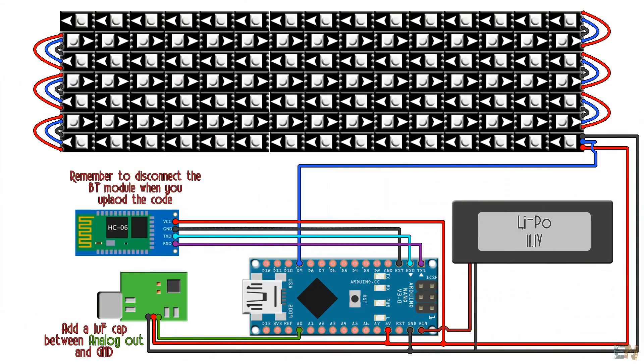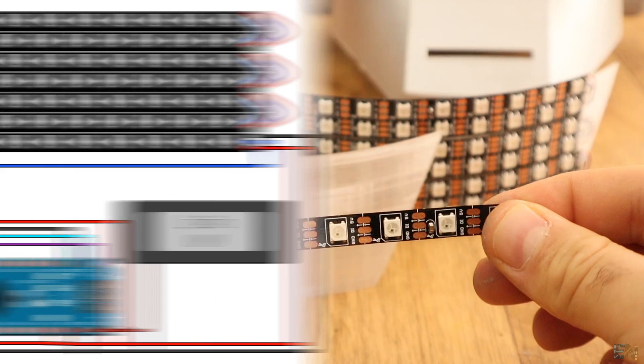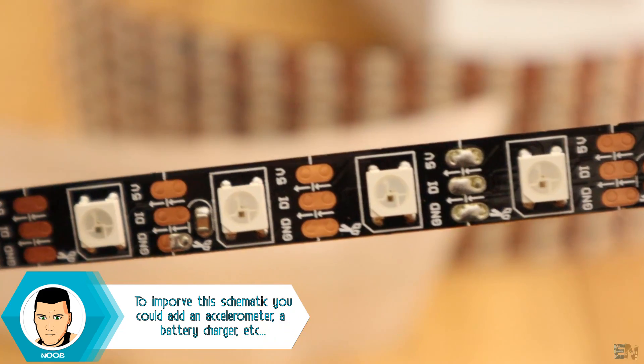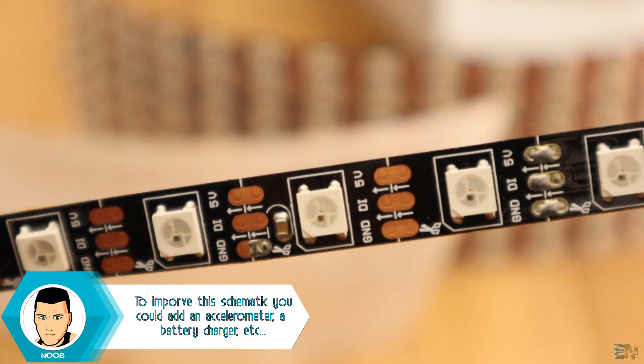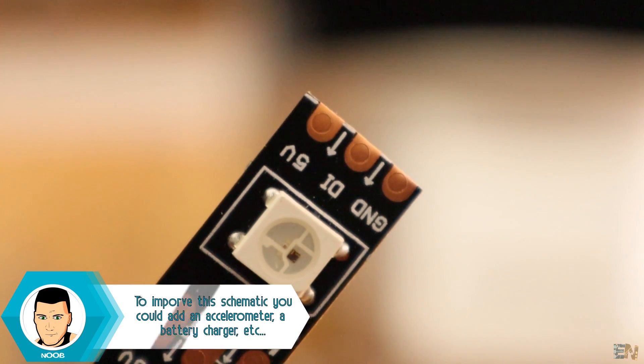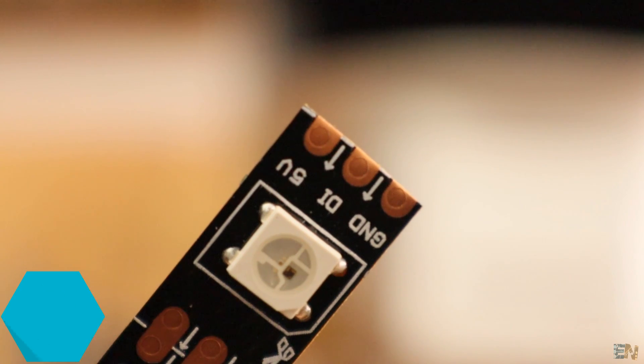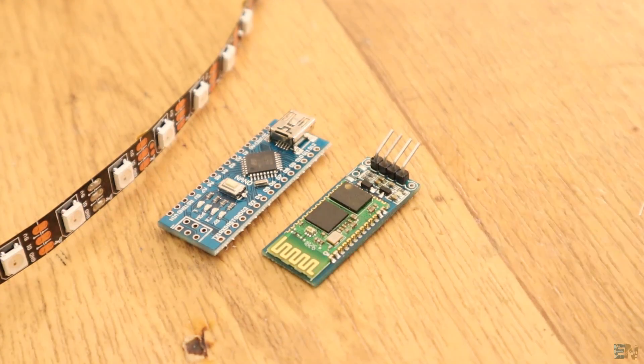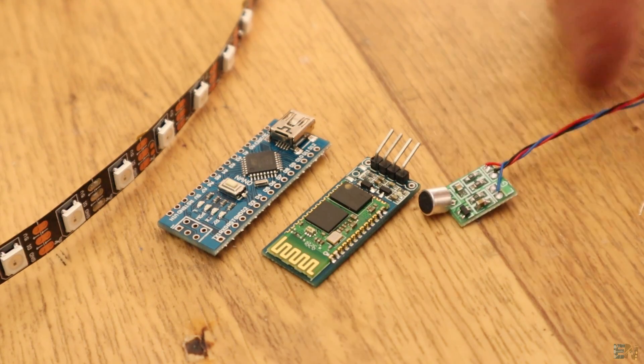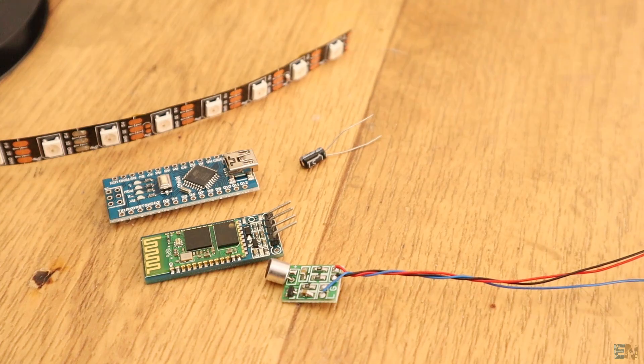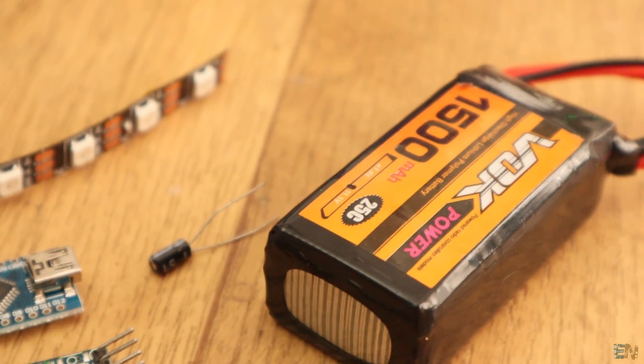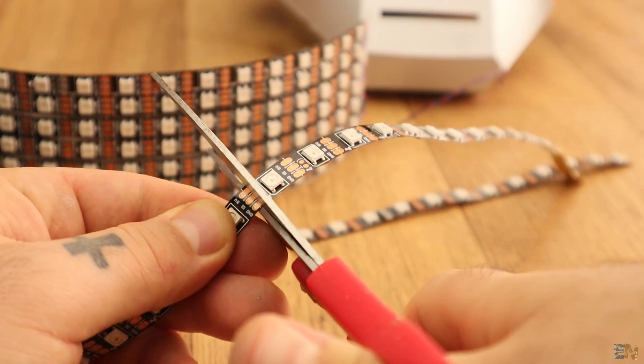Okay, so this is the schematic for this project. I've used around 1.5 meters of this addressable LED strip, the WS2812. All it needs is a connection to 5V, ground and the data pin. We also need an Arduino Nano, the HC06 Bluetooth module, a small microphone module like this one and a 1uF capacitor. To supply the helmet, I will use a LiPo battery of 11.1V.